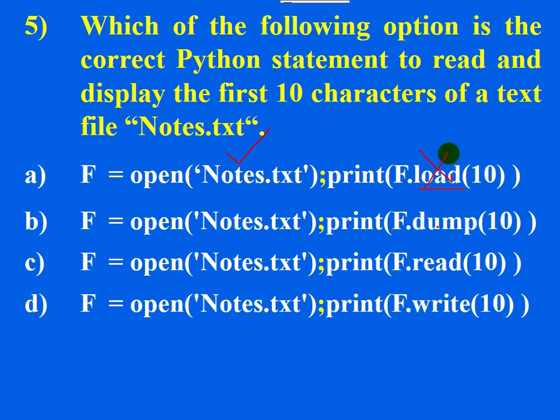The dump function is used to write data to a binary file, so this is also wrong. The write function is used to write data to a text file, and the argument should be a string, so this is also wrong.